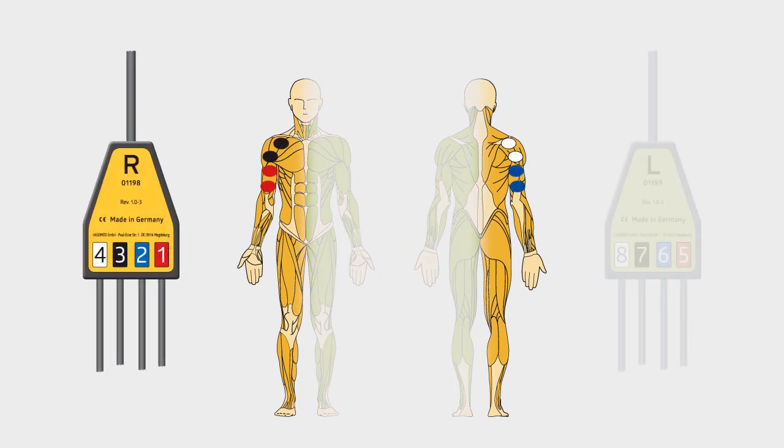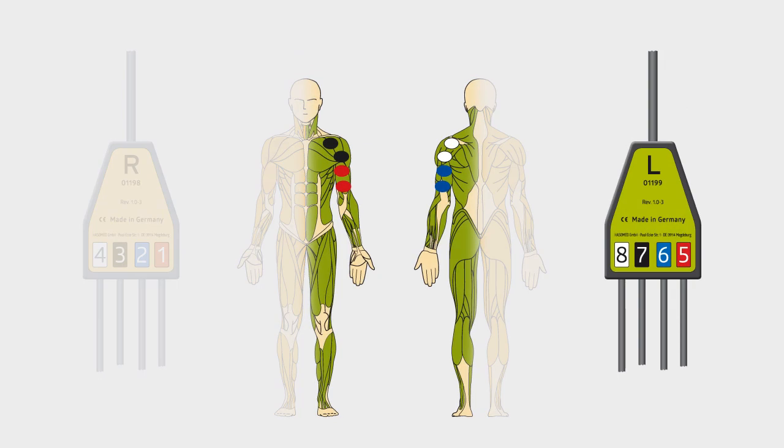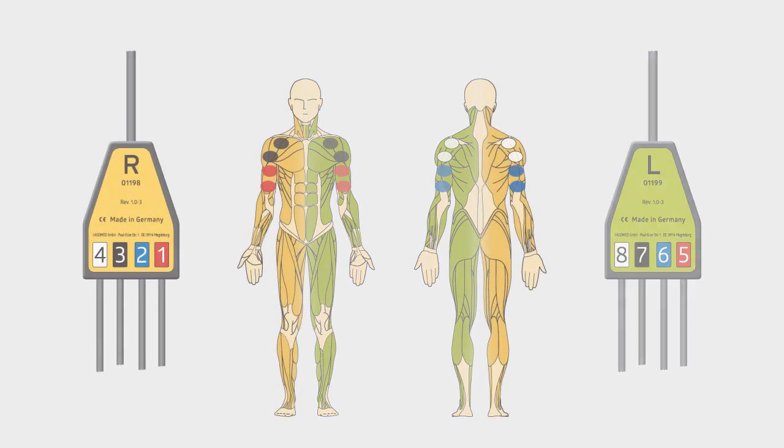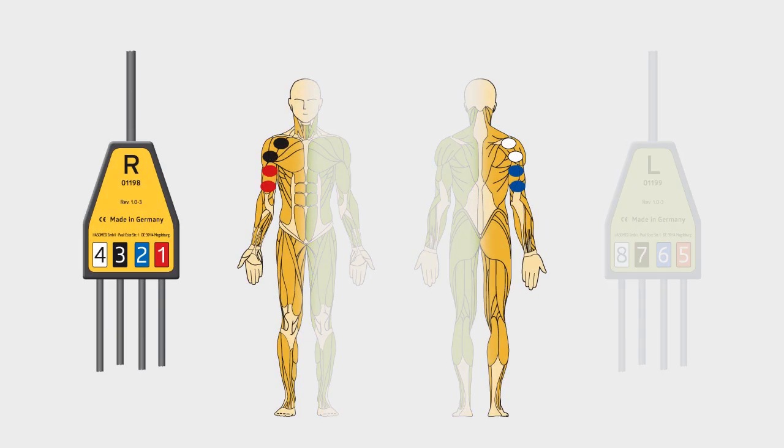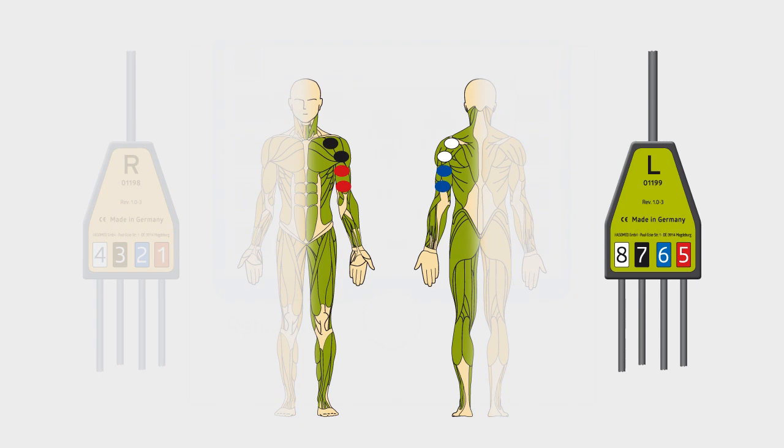The Hasamed cables and electrode connectors themselves are color-coded to match. This makes the application and allocation of the electrodes very easy and it saves time.